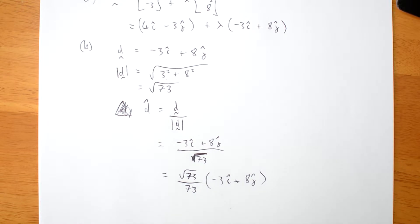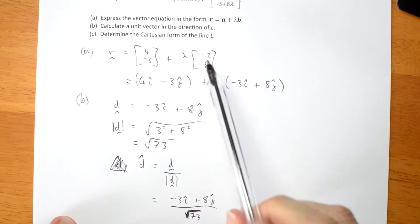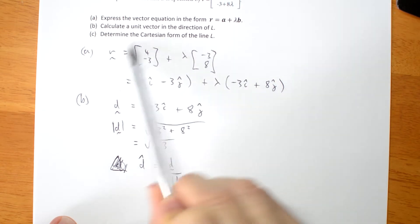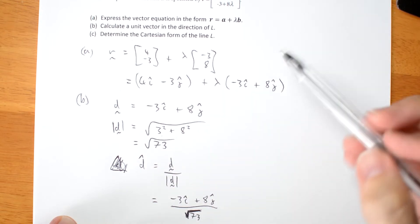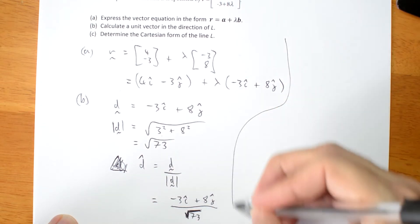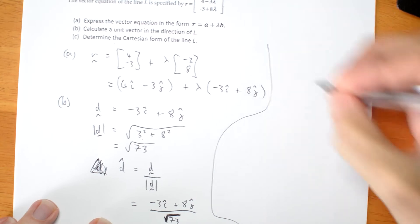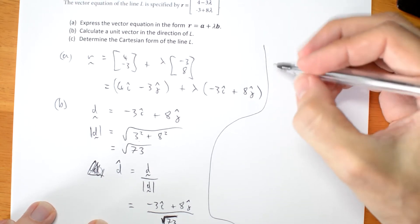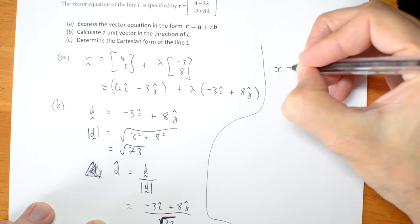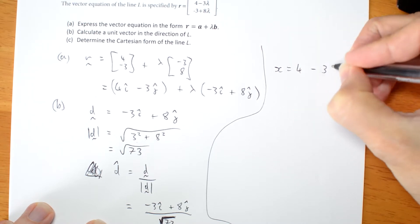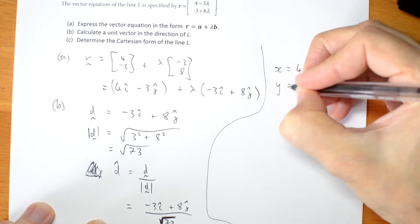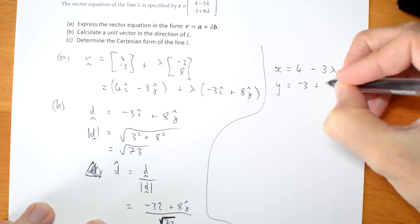Now to determine the Cartesian form. We're going to go back to our equation of the line and we're going to write parametric version of that. So x equals 4 minus 3 lambda, and y equals negative 3 plus 8 lambda.